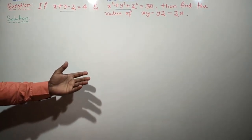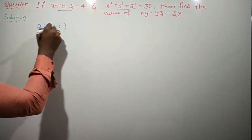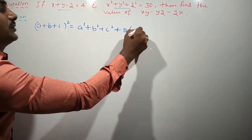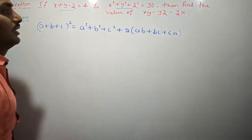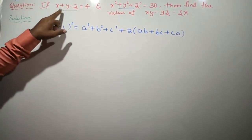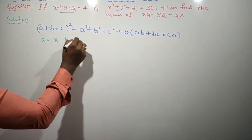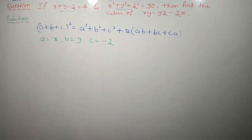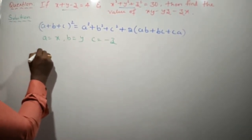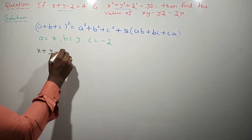Very easy. Based on the previous problem, I will write the identity: a plus b plus c whole squared is equal to a squared plus b squared plus c squared plus 2 into ab plus bc plus ca. Now observe: instead of a, b, c, here we have x, y, and minus z. In the place of a I substitute x, in the place of b I substitute y, and in the place of c I substitute minus z, because we have x plus y minus z.